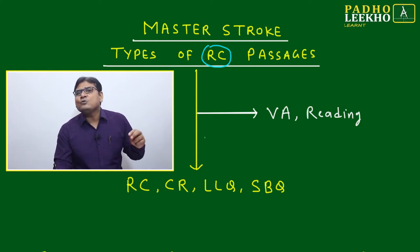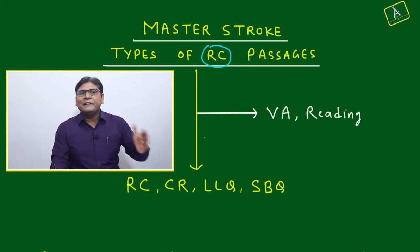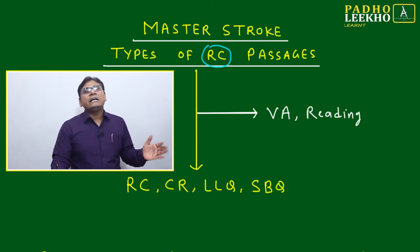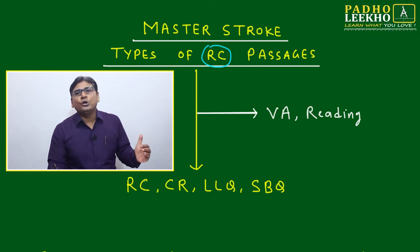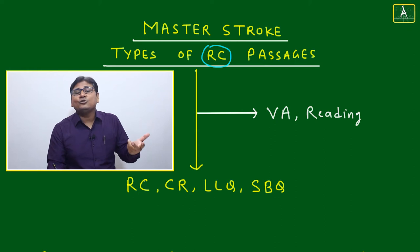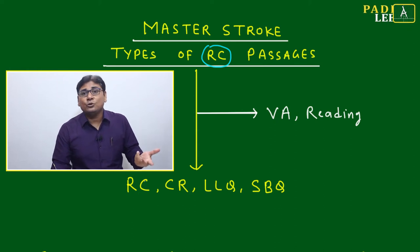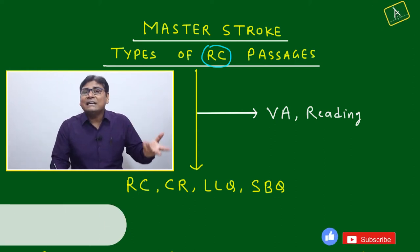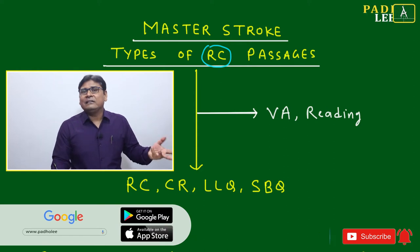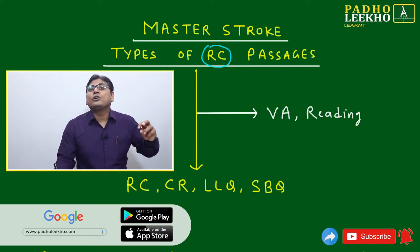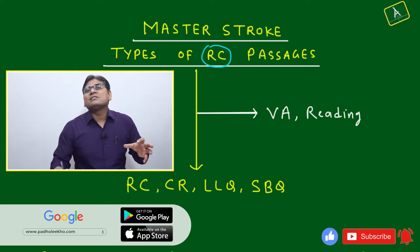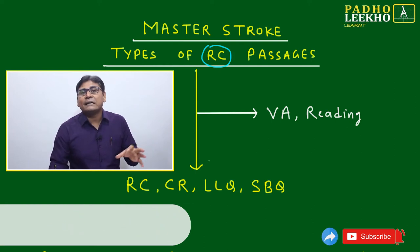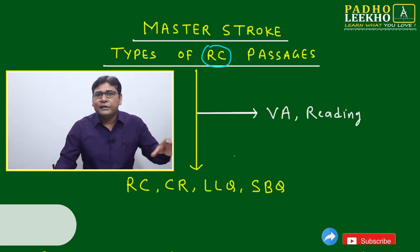The main weightage in VA will be for RC questions. If you are doing well in RC, it indicates that you are a good reader, your comprehension skill is very good, you are a logical and critical reader, and you are able to comprehend reading material in a very effective way.